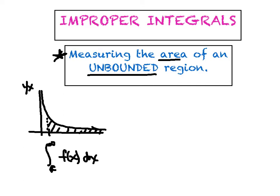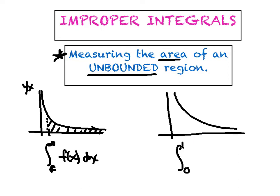The other idea is maybe we could take a look at the same graph, 1 over x again, but maybe our integral goes from 0 to 1 this time. Because the graph goes infinitely high without touching the y-axis, we again have an unbounded region at the top. We're going to try to measure the area of both of those regions today and see if we can come up with some kind of finite number, perhaps.